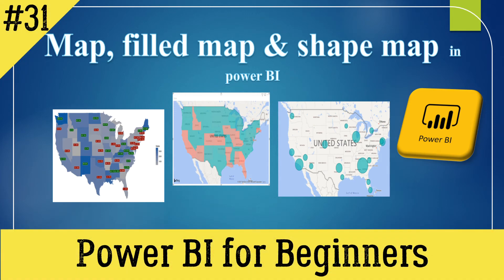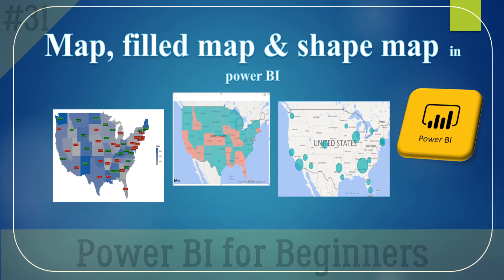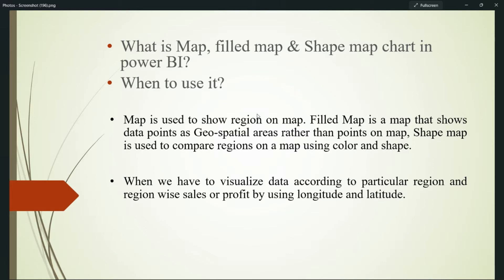Hello everyone, welcome back to my channel. Today I will explain the different chart types of maps used in Power BI Desktop. We'll see in detail what is map, filled map, and shape map chart in Power BI and when to use them. The map is used to show regions on a map; the filled map shows data points as spatial areas rather than points; and the shape map is used to compare regions using color and shapes. We use these when we need to visualize data according to a particular region — for example, sales and profit using longitude and latitude.